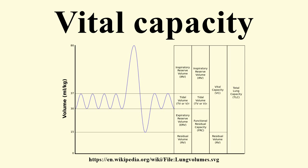A normal adult has a vital capacity between 3 and 5 liters. A human's vital capacity depends on age, sex, height, mass, and ethnicity. Lung volumes and lung capacities refer to the volume of air associated with different phases of the respiratory cycle.